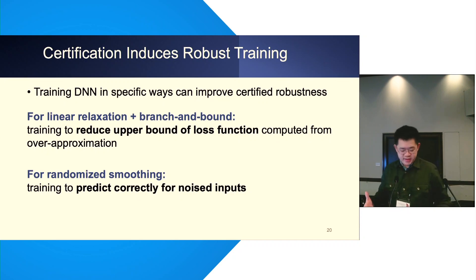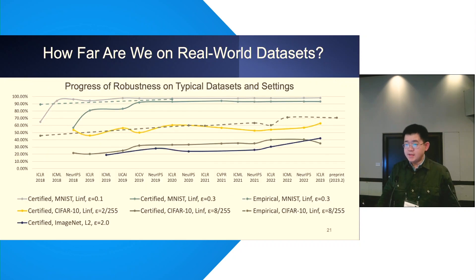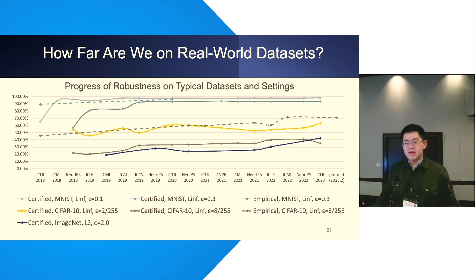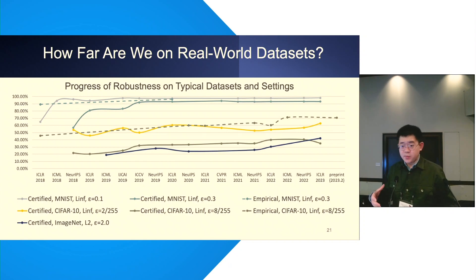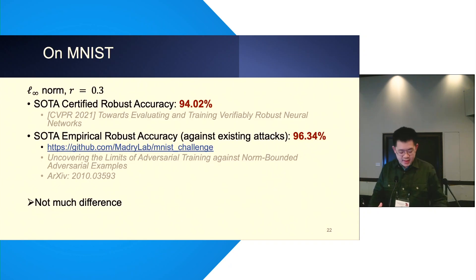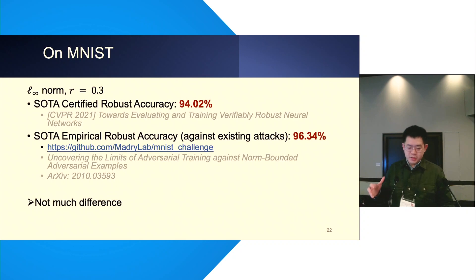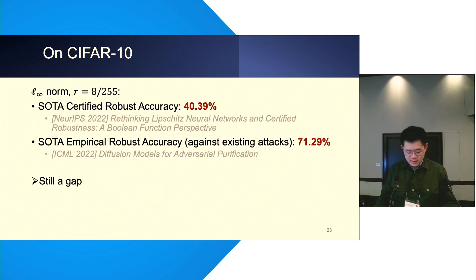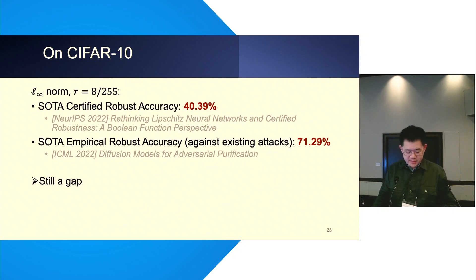After introducing these certification and training approaches, you may wonder how far they have achieved. Since 2017, the community has made remarkable progress on practical image classification on MNIST, CIFAR-10, and ImageNet. On MNIST, the current certified robustness has exceeded 94%, meaning that for 94% of test inputs, we can certify the model is robust, allowing each pixel to have 30% brightness change. On medium-sized CIFAR-10, tolerating 8/255 change per pixel, we can merely achieve around 40% robust accuracy, indicating there is still a gap to improve on larger datasets.